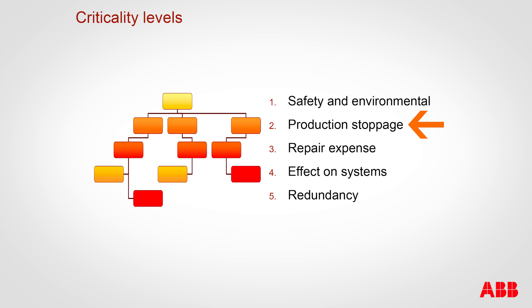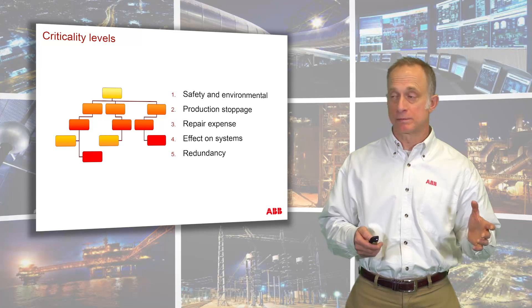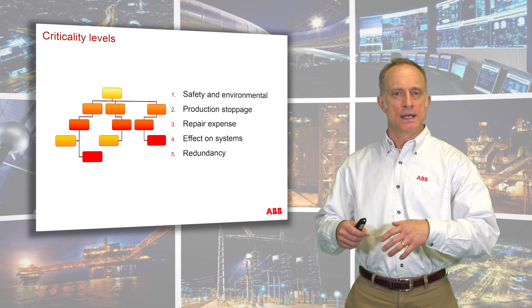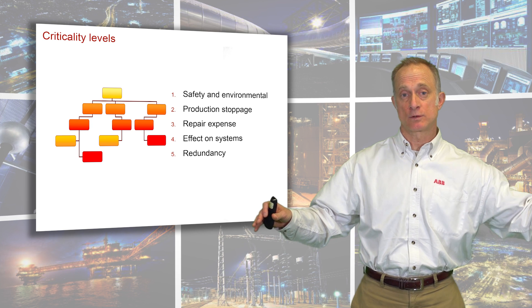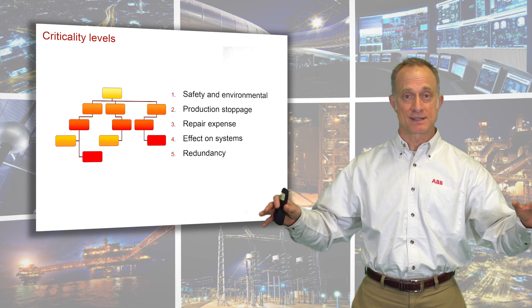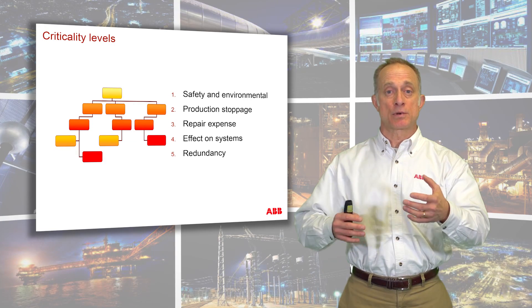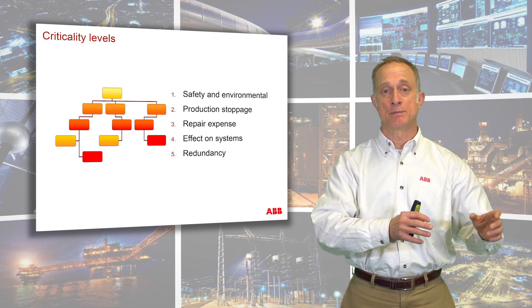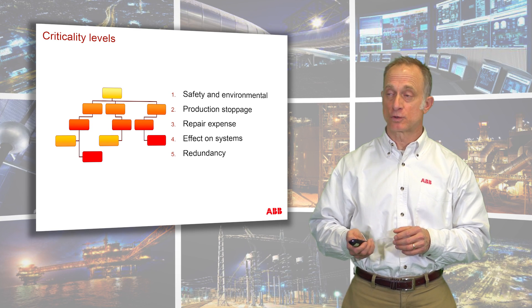The next consideration is production stoppage — if you're not making product, you're not making money. The third is maintenance expense — how costly is it to repair a certain piece of equipment? The fourth is the effect on the systems: a system is a collection of equipment, so what is the ripple effect if something breaks here on other pieces of equipment? And fifth, redundancy — does this process have redundant features so that if it fails in one area it picks up in another? If it's lacking redundancy, then it could be a higher level of criticality.